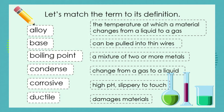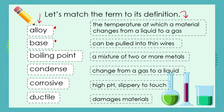I hope you've got a pen and paper handy, but if you haven't, don't worry — shout out the answers. Our first challenge is to match the term to its definition. Here are all our terms: we can't use words like alloy, base, and so on unless we know what they mean — not just their everyday meaning, but their scientific meaning. Let's look at what terms we have: alloy, base, boiling point, condense, corrosive, and ductile. We've got a series of definitions that we have to match those terms to.